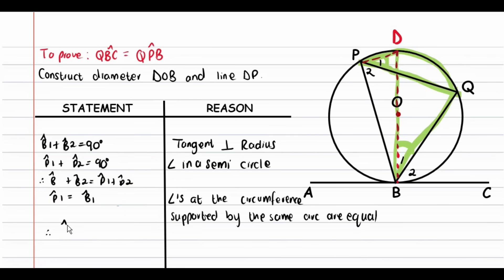We can therefore conclude that angle B2 equals angle P2. Remember what we were required to prove: angle QBC, which is angle B2, equals angle QPB, which is angle P2. And there we go — we have proved that the angle between the tangent and the chord is equal to the angle supported by the same chord.